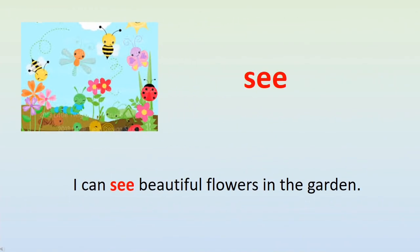The word is see. Children, the meaning of see is to look or to watch something. Now let's make a sentence out of it: I can see beautiful flowers in the garden.